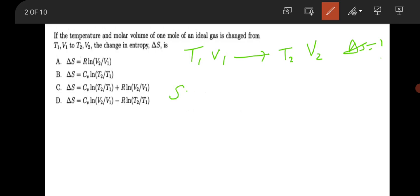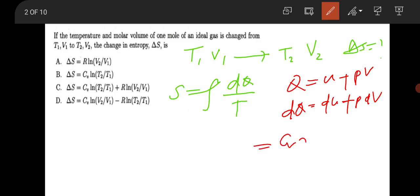Your entropy is equal to integration over dQ by T. Use the first law of thermodynamics, that is Q equal to U plus PV. So your dQ will be dU plus P dV. Your dU will be Cv dT and your PV will be nRT by V times dV, because you know the ideal gas equation is PV equal to nRT.